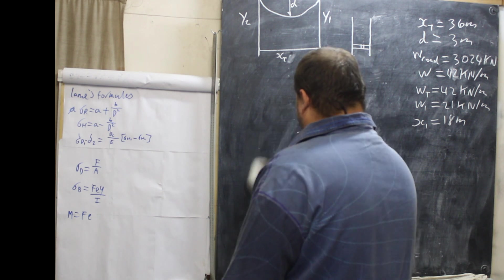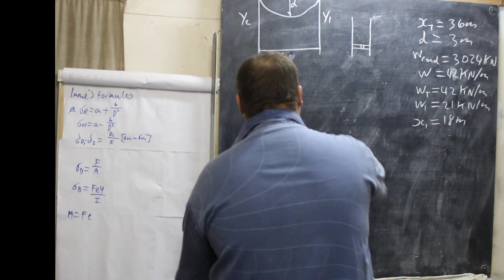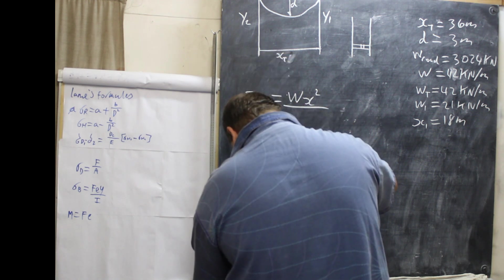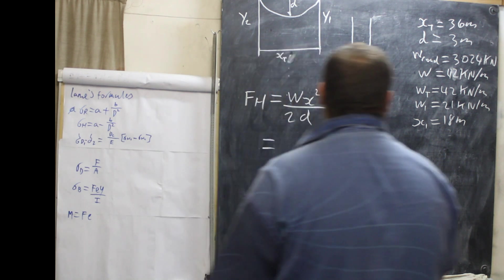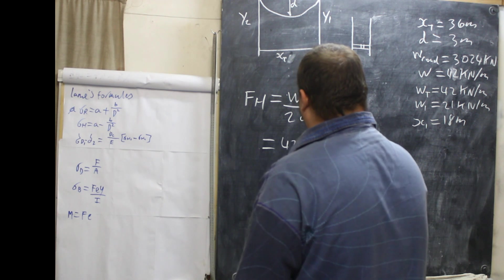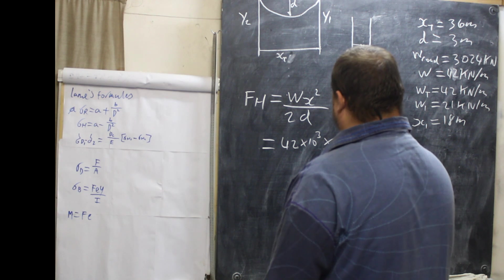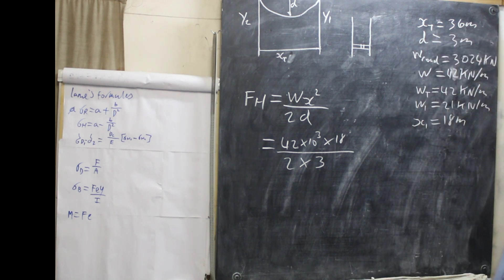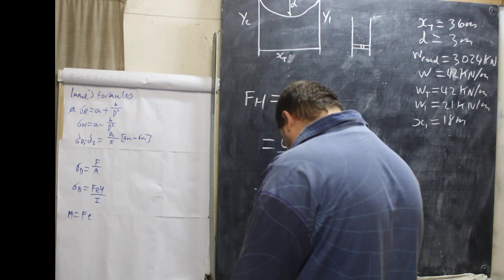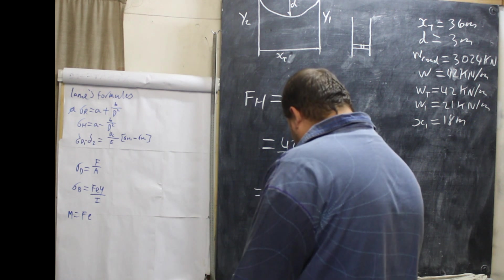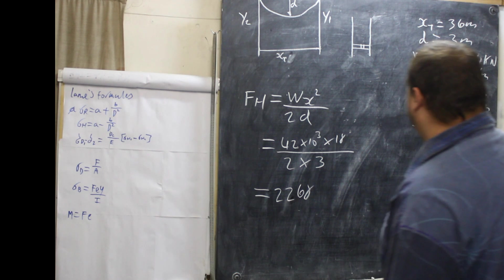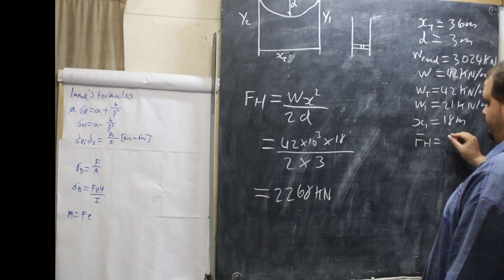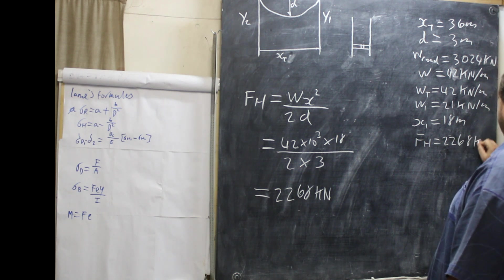Now we put our formula in: FH equals W times X squared over 2d. W is 42 times 10 to the 3, X is 18 — because this is one cable — divided by 2 times 3. Putting this all in the calculator, we are left with FH equals 2268 kilonewtons.